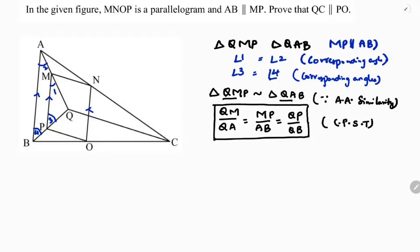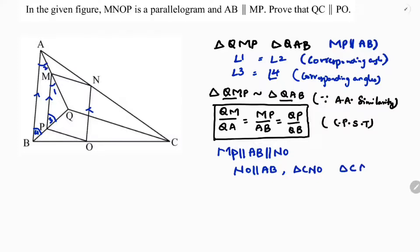Now, MN is parallel to AB — given. And MN is parallel to NO also, because it's a property of the parallelogram. So NO is parallel to AB. I'll now take triangles CNO and CAB and prove these two similar, since these lines are parallel.